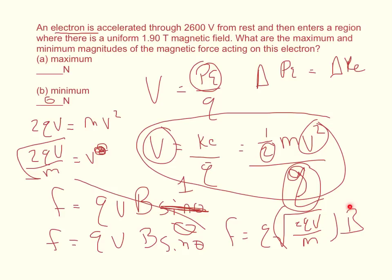Then the magnetic field is 1.9 tesla. When you plug all that in, the maximum force should equal approximately 9.187 times 10 to the negative 12 newtons.